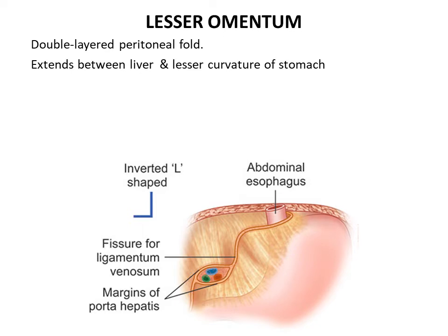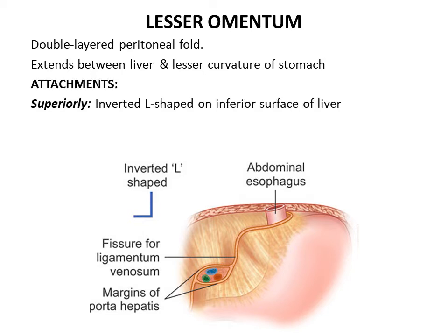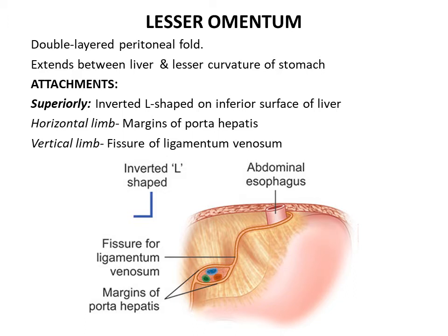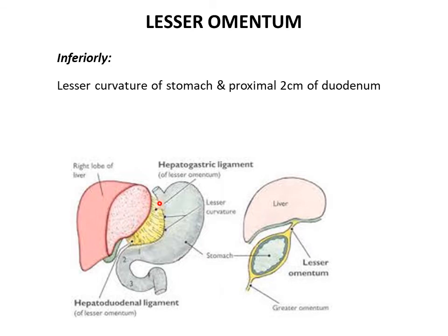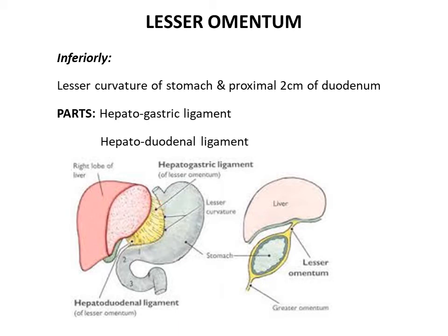The lesser omentum is a double-layered fold of peritoneum which extends between the liver and the lesser curvature of the stomach. Its superior attachment to the inferior surface of the liver is in the form of an inverted L-shape with two limbs: a horizontal limb attached to the margins of the porta hepatis, and a vertical limb attached to the fissure of the ligamentum venosum. Inferiorly, it is attached along the lesser curvature of the stomach and extends to the proximal two centimeters of the duodenum. It can be subdivided into the hepatogastric ligament and the hepatoduodenal ligament.